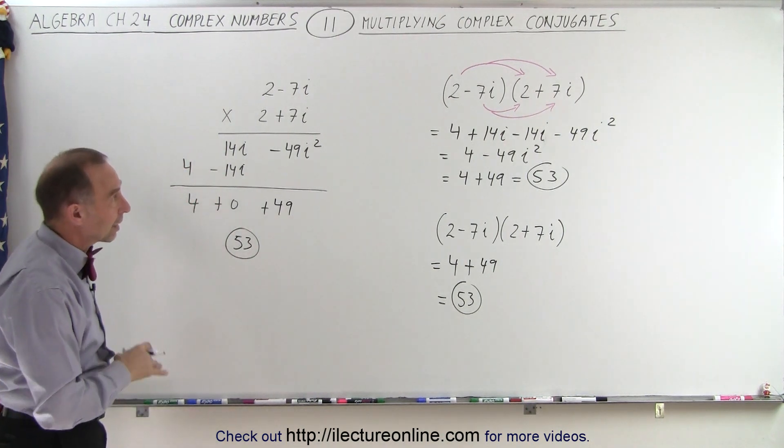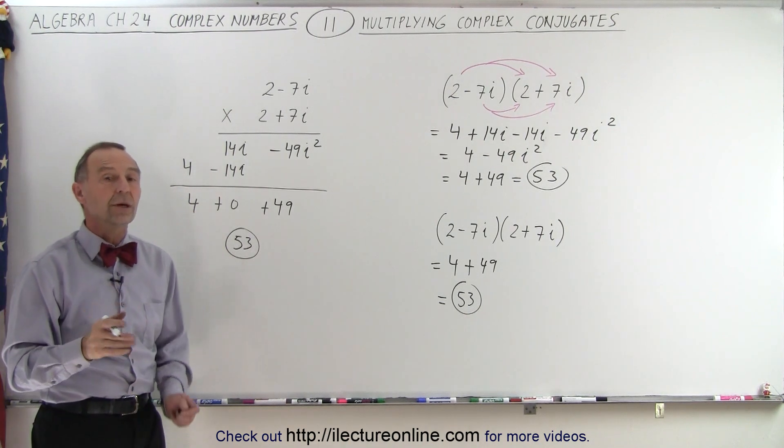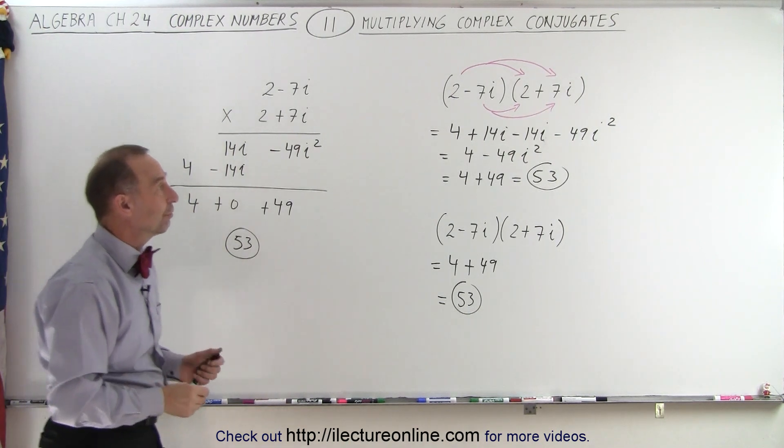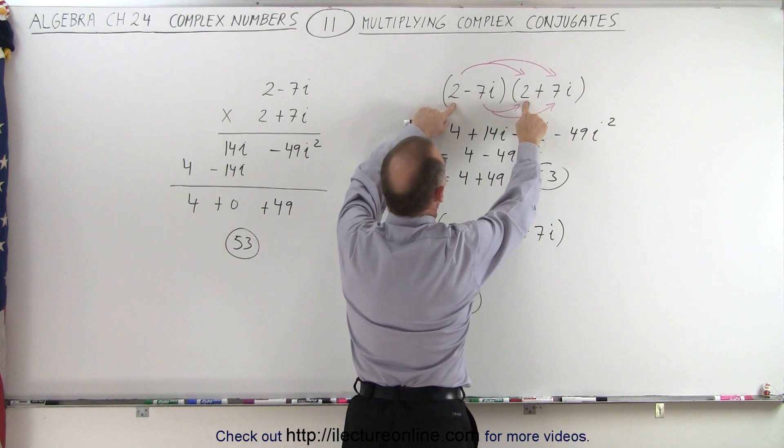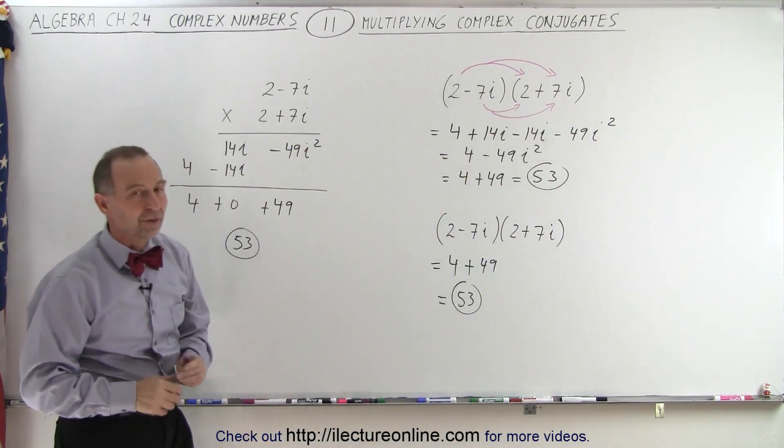Notice, multiplying a complex number by its conjugate gives you just a real number, and it's rather easy to figure out. It's simply 4 plus 49 is 53, and that's as simple as it gets.